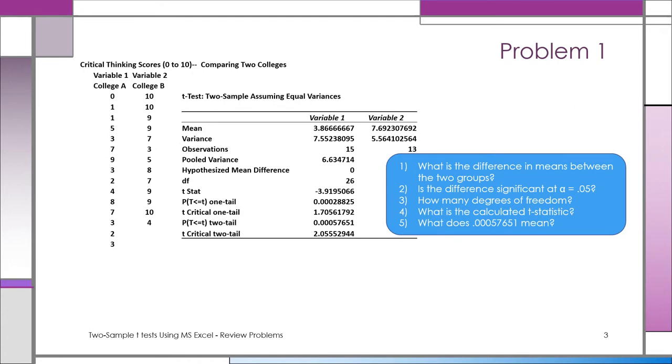In this problem, we're going to examine critical thinking scores which range from 0 to 10, the higher the better, and we're comparing two colleges—College A and College B. The printout is in front of you. That's the Microsoft Excel output. We're doing a t-test, assuming equal variances, and now we're going to ask you some questions about this printout that you get from Excel.